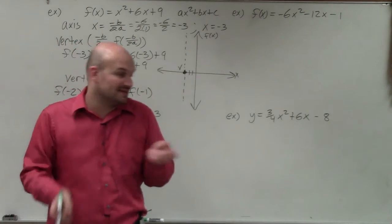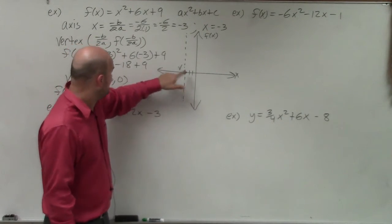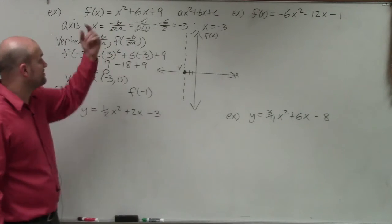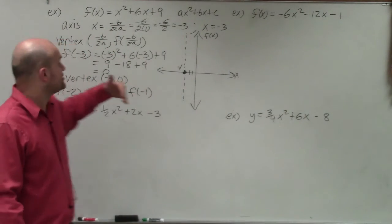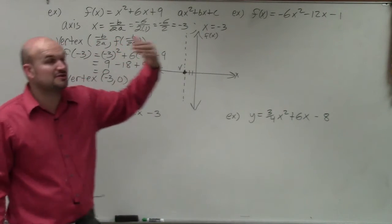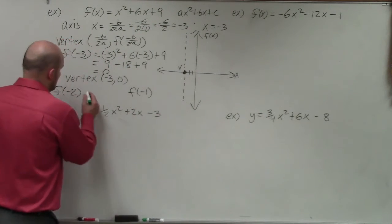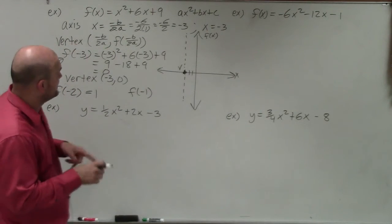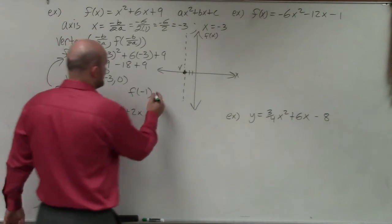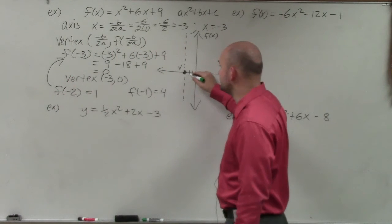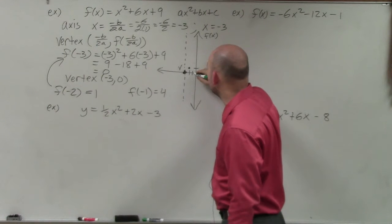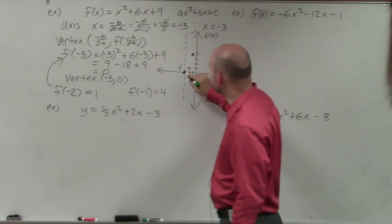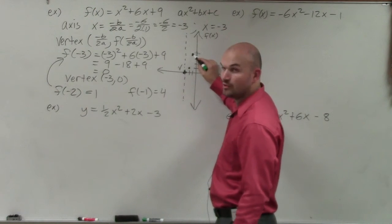For f(-2): negative 2 squared is positive 4; 6 times negative 2 is negative 12; positive 4 minus 12 is negative 8; negative 8 plus 9 is positive 1. For f(-1): negative 1 squared is positive 1; 6 times negative 1 is negative 6; negative 6 plus 1 is negative 5; negative 5 plus 9 is positive 4. So I plot negative 2 comma 1 and negative 1 comma 4. You can see this confirms the pattern from the vertex when a equals 1 — over 1 up 1, over 2 up 4.